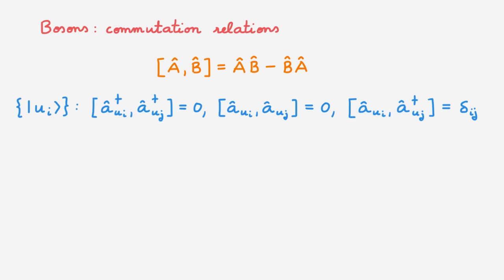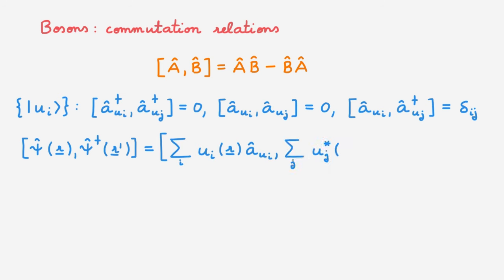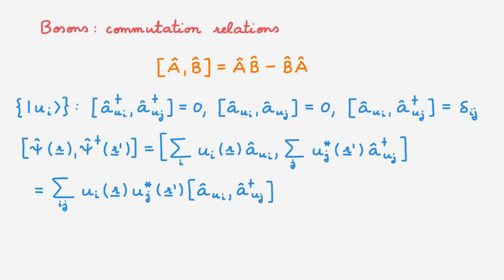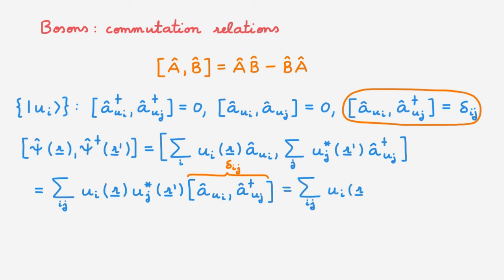Let's write down the final combination we need: the commutator between an annihilation field operator and the creation field operator. Using the usual expressions in terms of annihilation and creation operators in the u basis, we get the commutator of a sum over annihilation operators with a sum over creation operators. Using the standard rules of commutators, we rewrite the commutator of the sum as the sum of the commutators. These commutators are just the usual commutators in the u basis, and using the result above, we get delta_ij. Overall we end up with a long expression. We then carry out the summation over j, and thanks to the Kronecker delta, only the term for which j equals i survives.